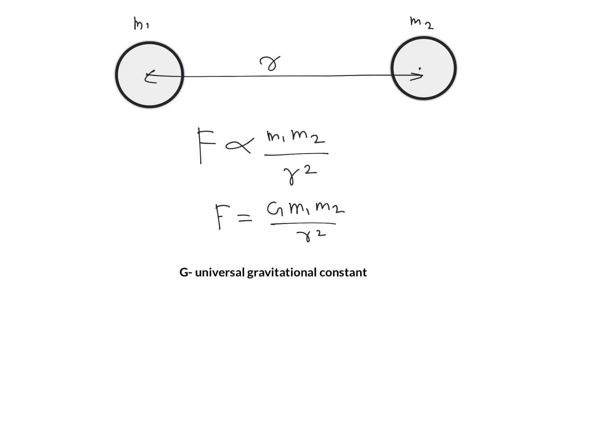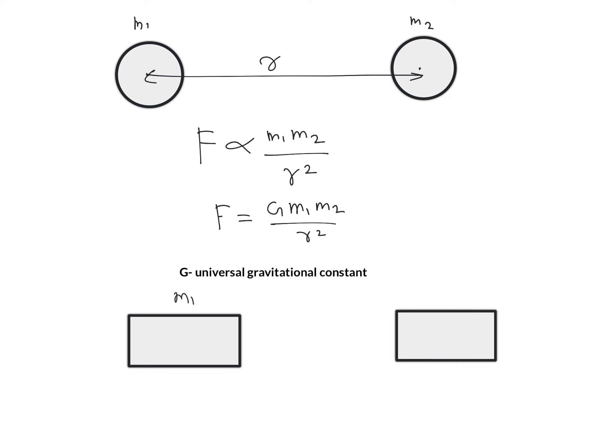Remember that the equation F = G·m1·m2/r² is valid only for point masses. For an extended object we cannot directly use this equation. For example, if you have an object of mass m1 that is not a point mass but an extended rectangular-shaped object, and another object of mass m2, you cannot directly apply this formula.